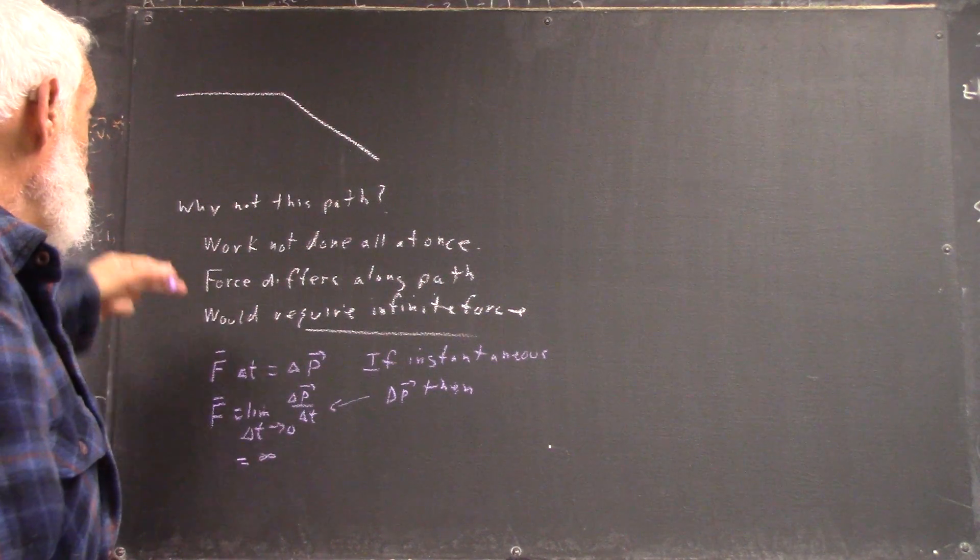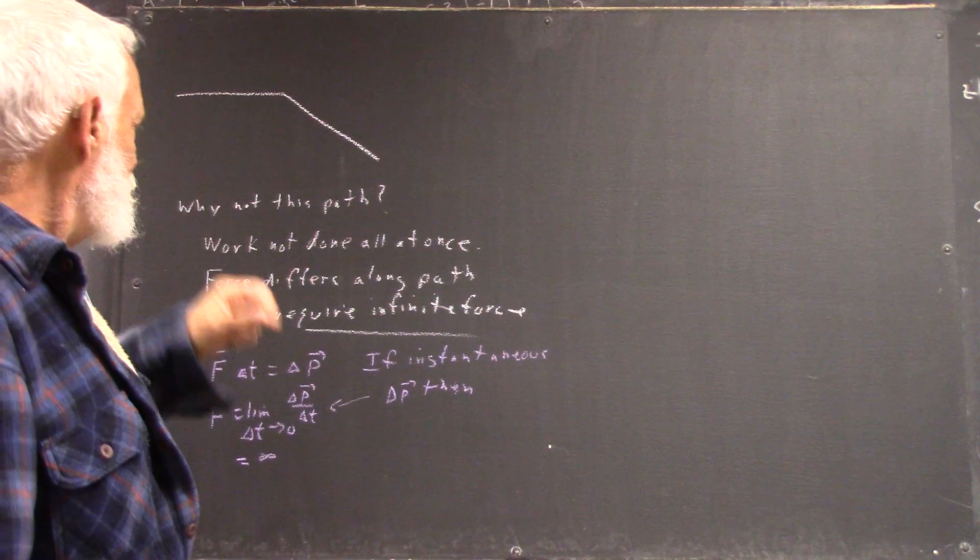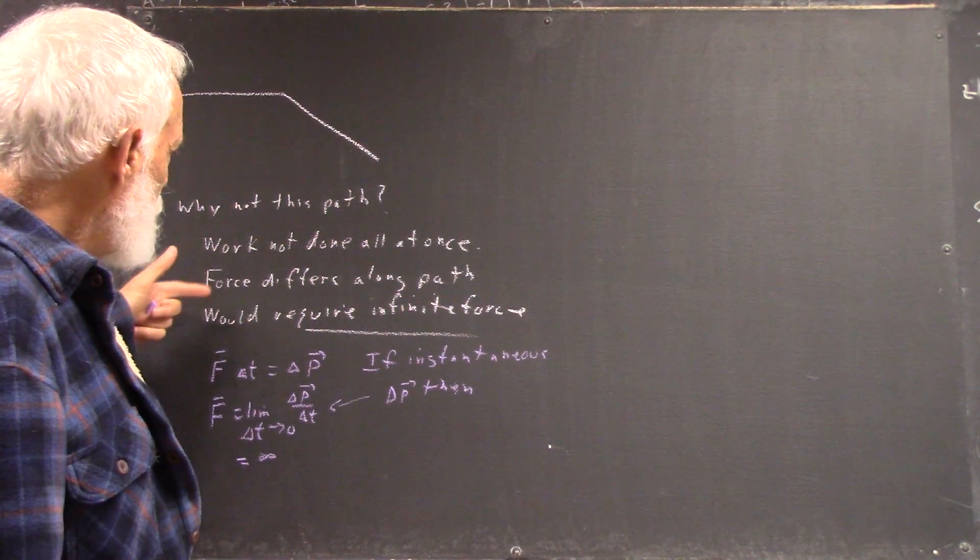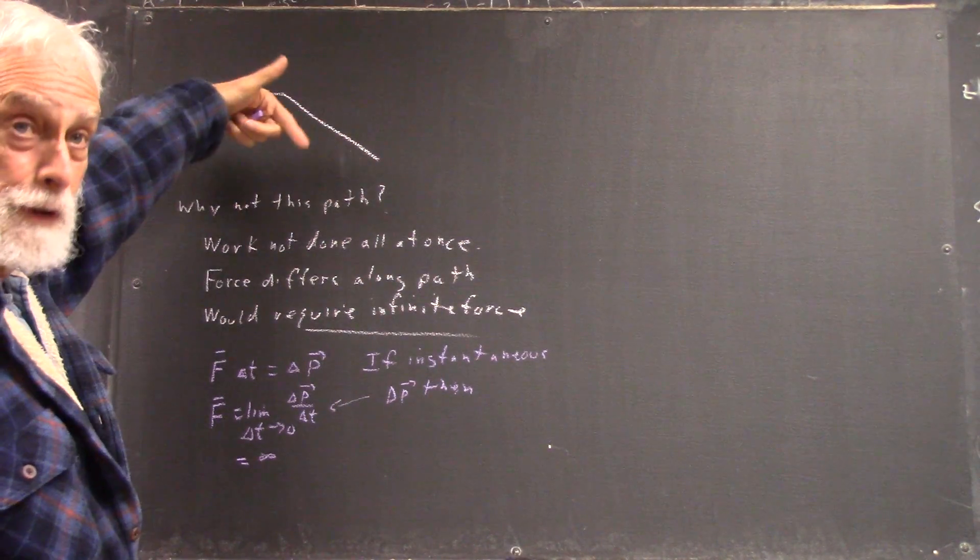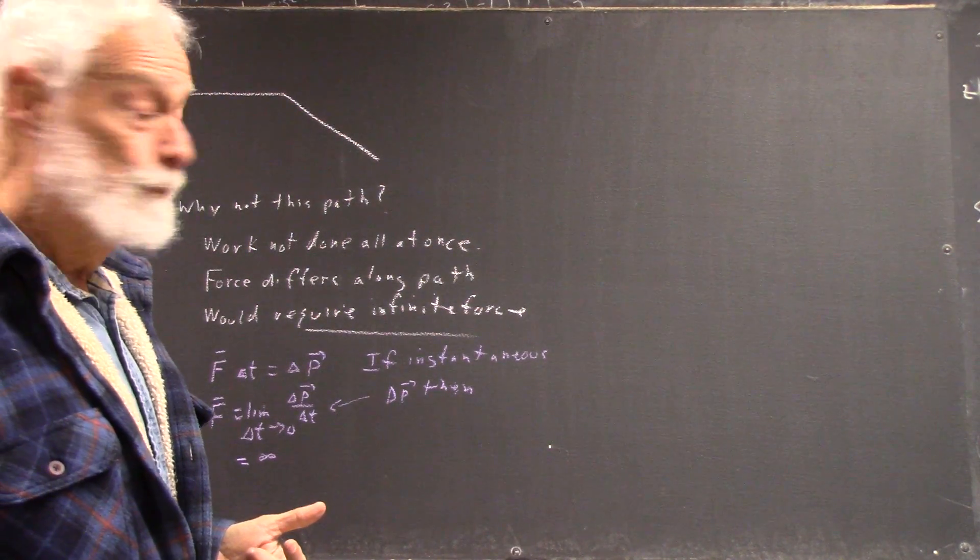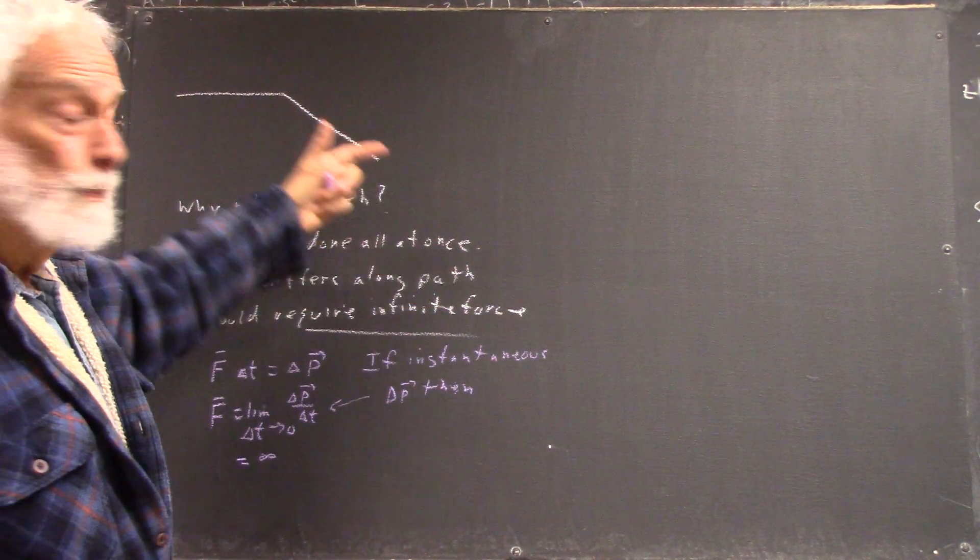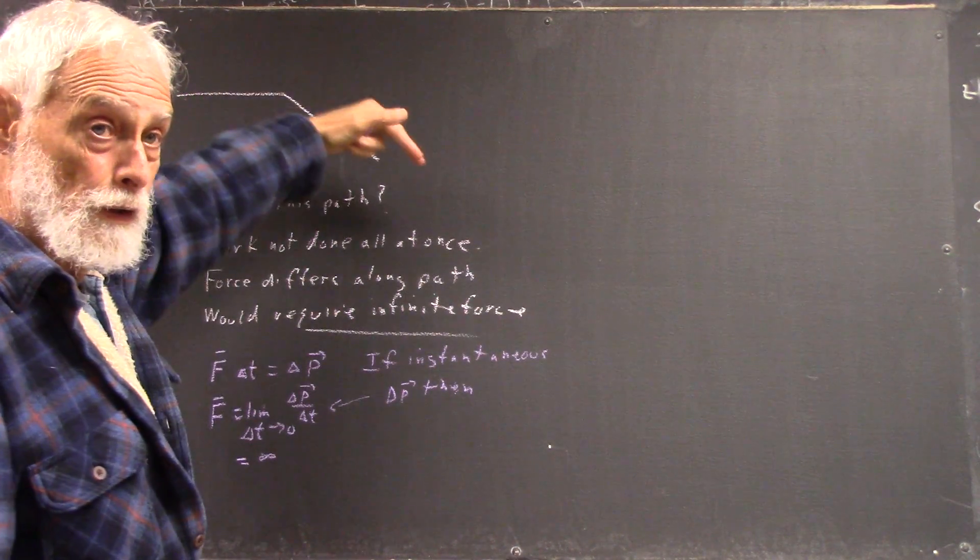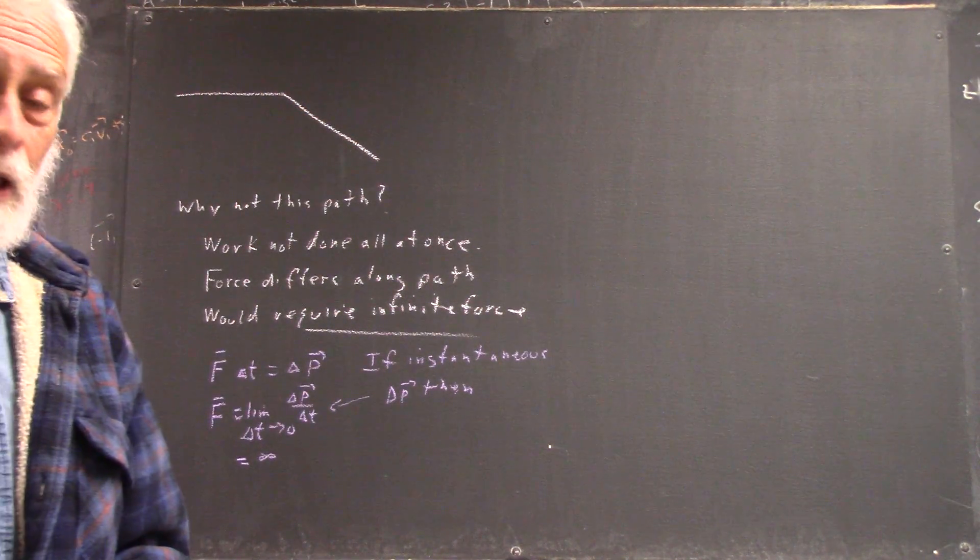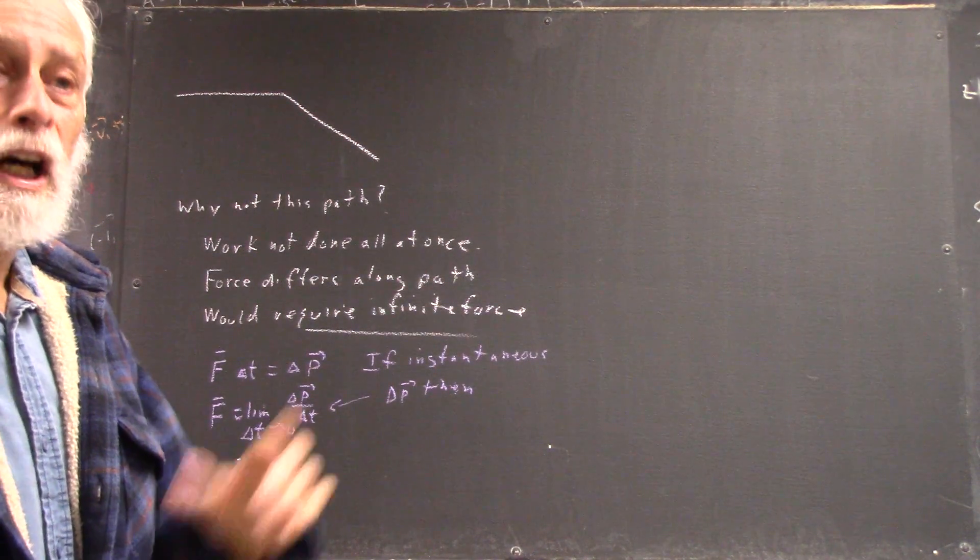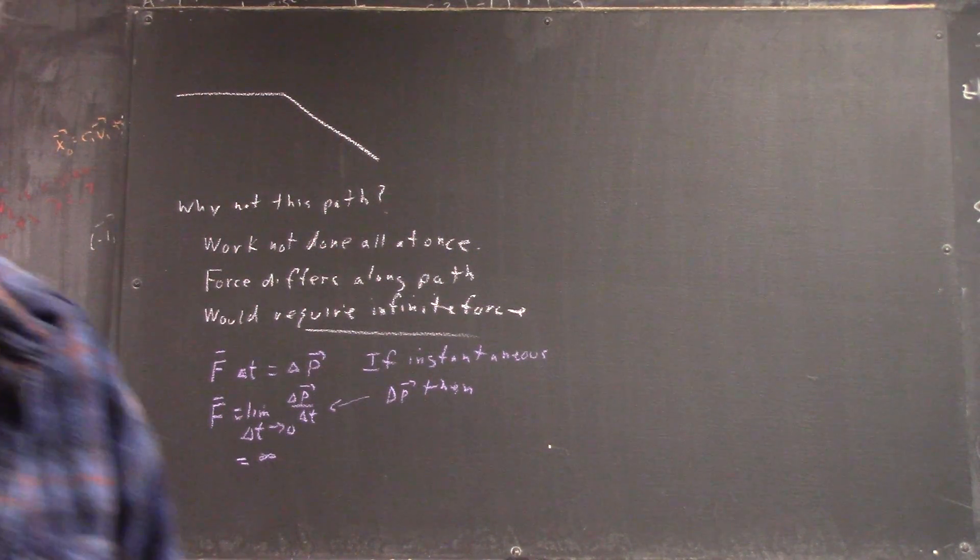And the other answers are good as well because the force continues to change along the path, which will continue to cause momentum to change, won't it? And work is not done all at once. Work is being done in this direction over a significant range of the path. Actually, it's been done over the entire range of the path, but non-negligible work is done over significant distance. Make sense?